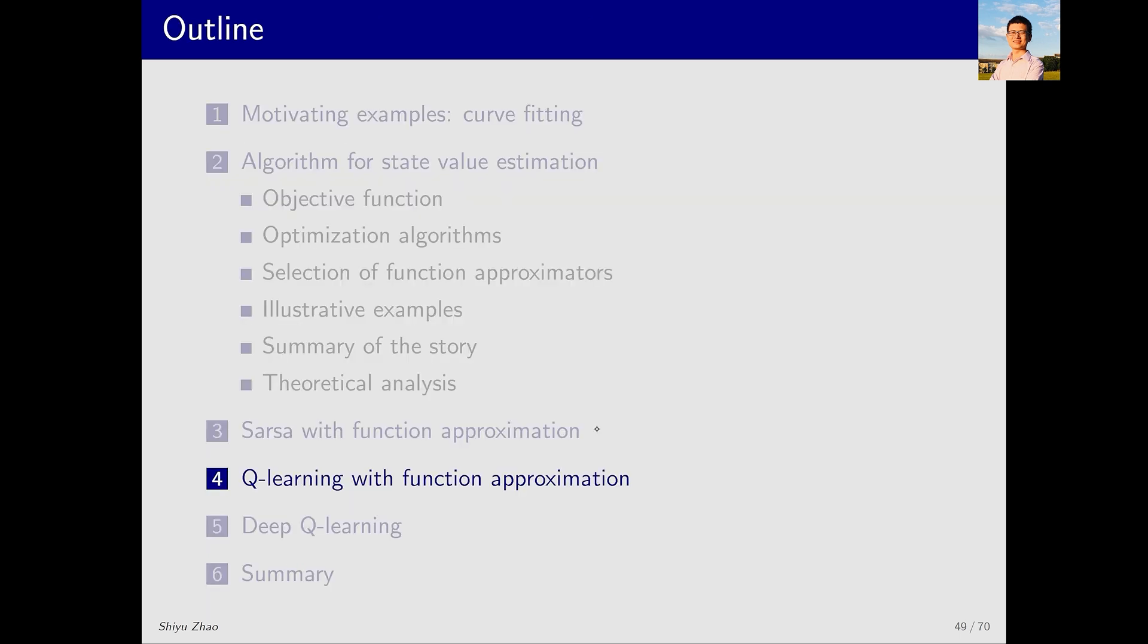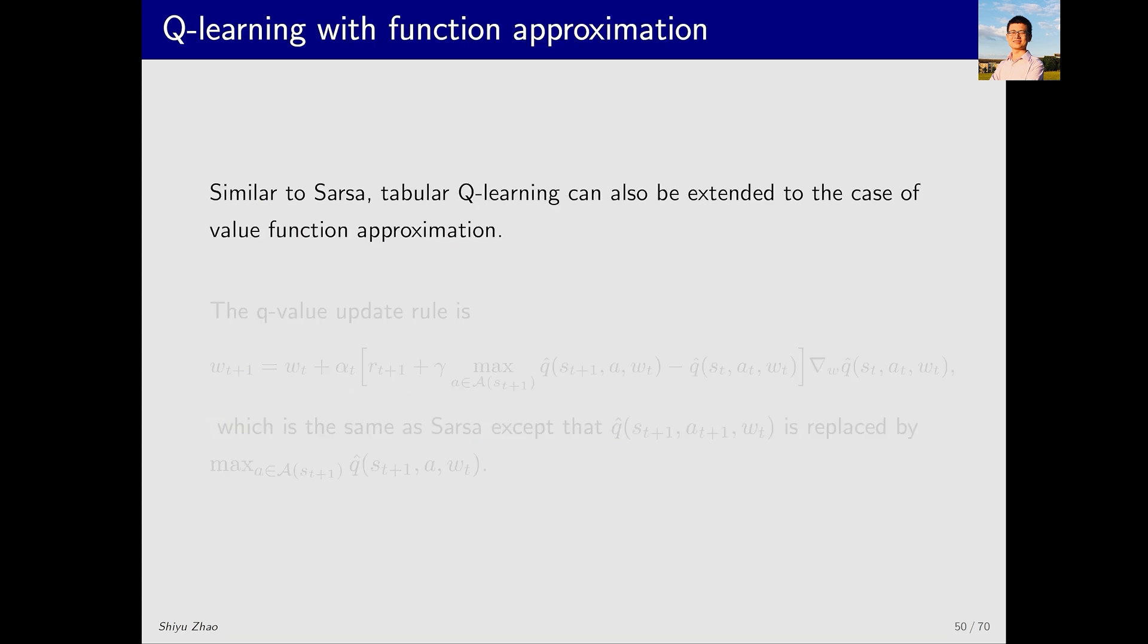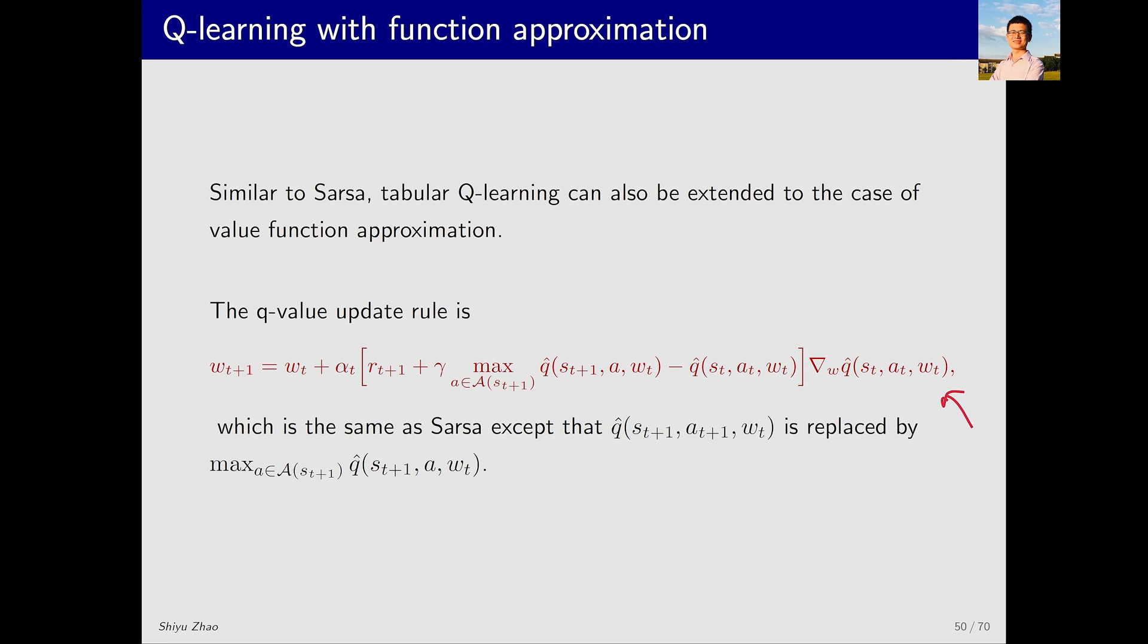Just now we introduced the combination of SARSA and value function approximation. You may have noticed that the introduction was very brief—we used only three slides to introduce why, because the previous sections already laid a very solid foundation for us, so we didn't need to introduce it again here. Next we'll introduce the combination of Q-learning and value function approximation. The introduction will also be very brief. Let's jump straight into the algorithm. This is the algorithm obtained by combining Q-learning with value function approximation. This algorithm is very similar to the SARSA algorithm we just discussed.